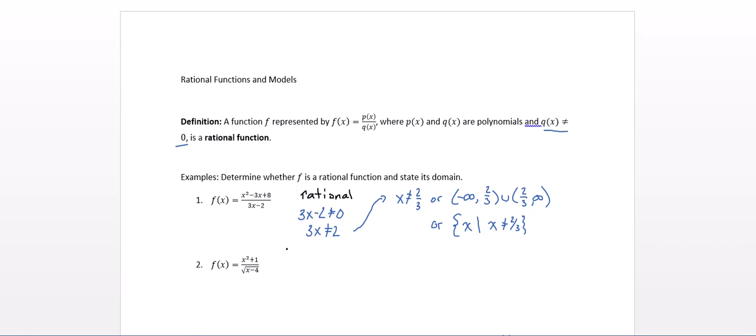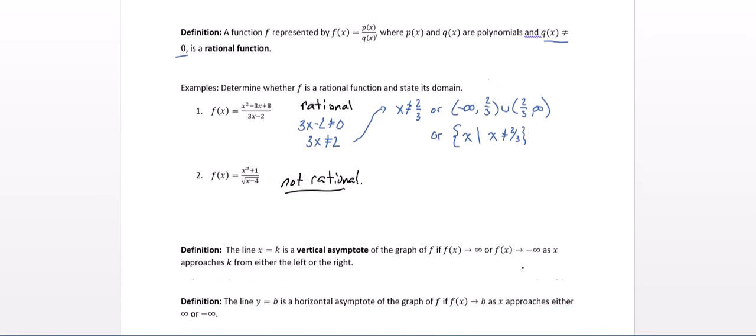Determine whether f is a rational function and state its domain. So x squared plus 1 is a polynomial. However, the square root of x minus 4 is not a polynomial. So this is not a rational function. Because it's not rational, I'm not going to bother with the domain at this point.